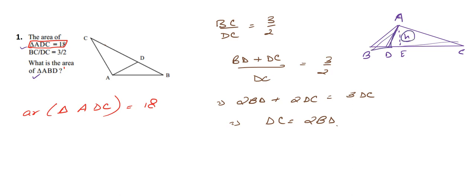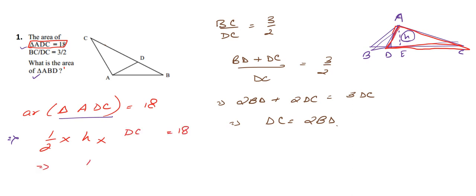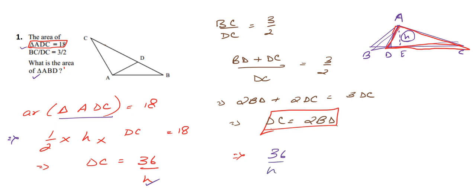Now for the area of triangle ADC: area equals half times height H times base DC, and this equals 18. From here we get DC equals 36 by H. From the relation DC equals 2BD, we can substitute to find BD as well: 36 by H equals 2BD.